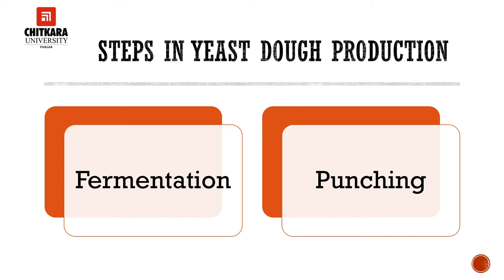The fourth step in yeast dough production is punching. Punching is not hitting the dough with your fist. It is a method of deflating the dough that expels carbon dioxide, redistributes the yeast for further growth, relaxes the gluten, and equalizes the temperature throughout the dough. Additional fermentation and punching may or may not be necessary depending on the product.